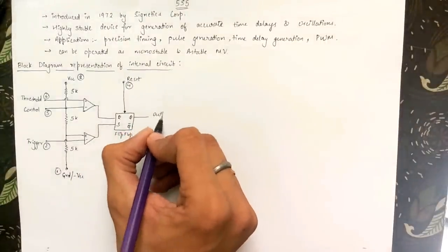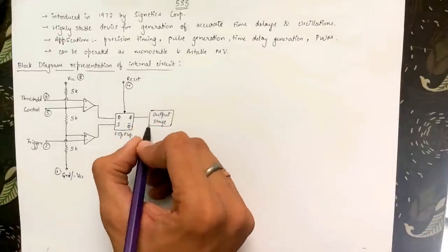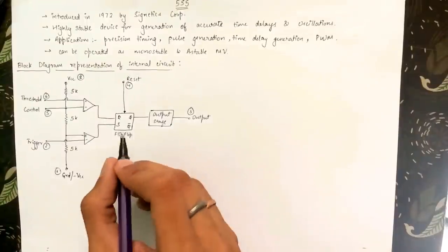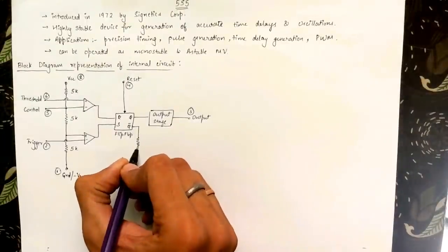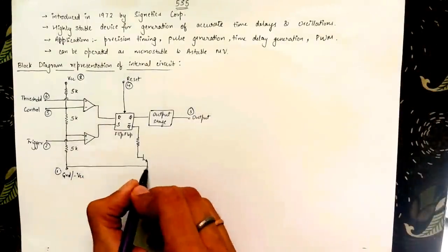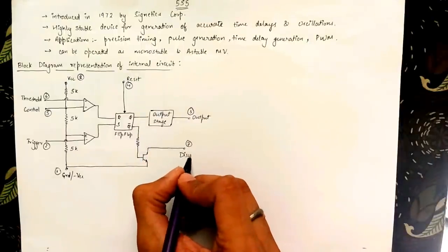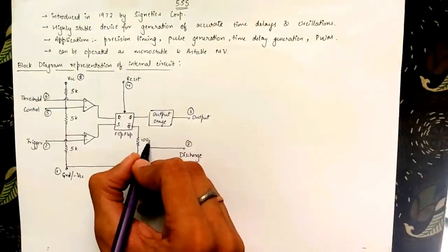The output of the flip flop is taken out as pin 3 of the IC passing through an output stage. The complementary output of the flip flop is connected through a 100 ohm resistor to the base of transistor Q1. The emitter of the transistor Q1 is connected to the ground and the collector is taken out of the IC as discharge pin or pin number 7.